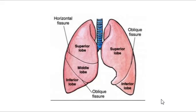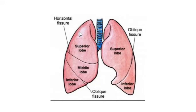Let's start by labeling the surfaces of the lung. We have an apex, which is the highest point — the top of the lung. We have the costal surface, where the ribs make impressions — so if you see a lung outside the body, you'll see the depressions made by the ribs. We also have the diaphragmatic surface, the area that rests on the diaphragm.